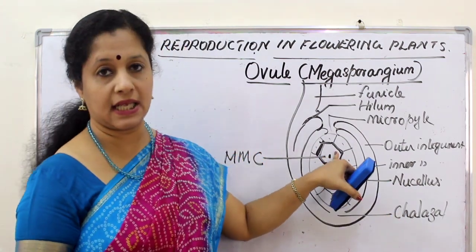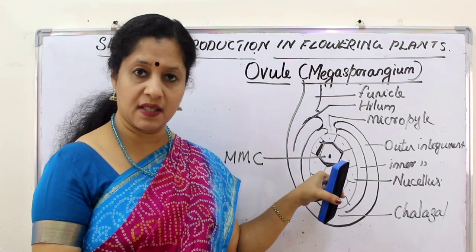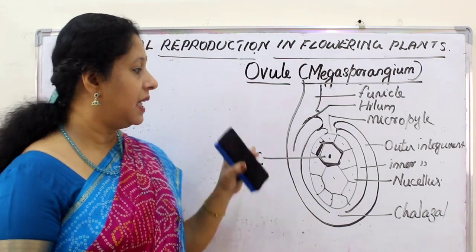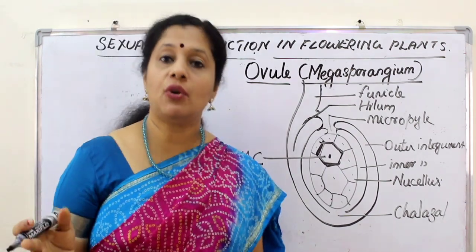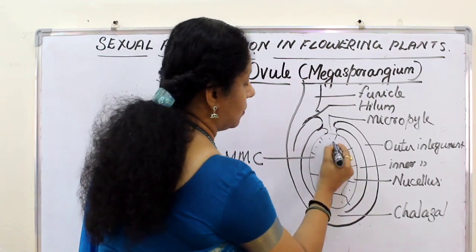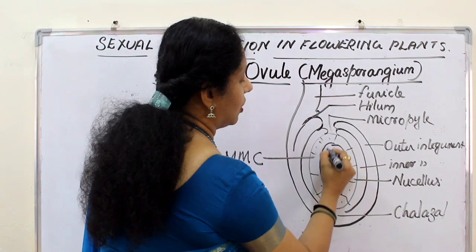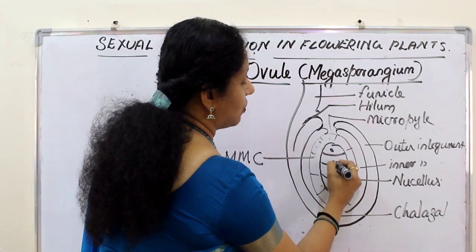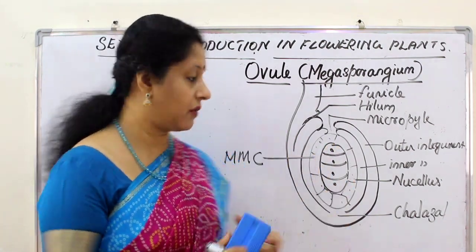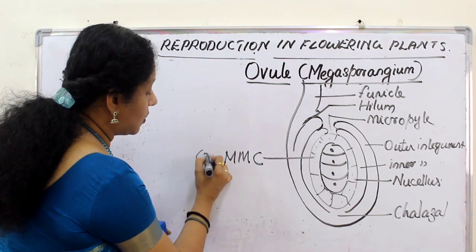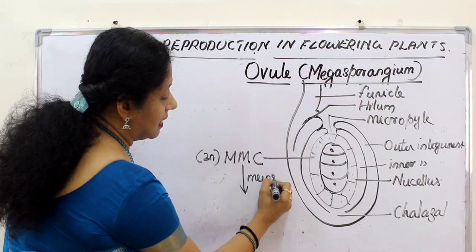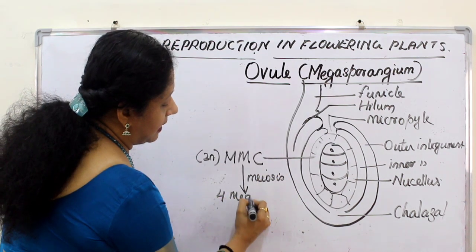This one cell in the micropylar end is called the archesporial cell, which becomes the megaspore mother cell. You know that a mother cell will undergo meiosis, so this cell divides into four daughter cells — we get four megaspores. The megaspore mother cell is diploid, it divides by meiosis, and it forms four haploid megaspores.